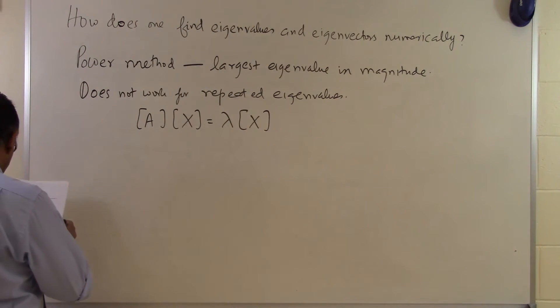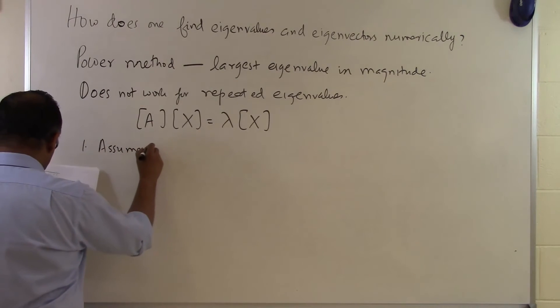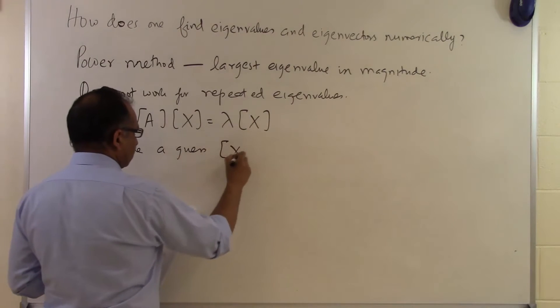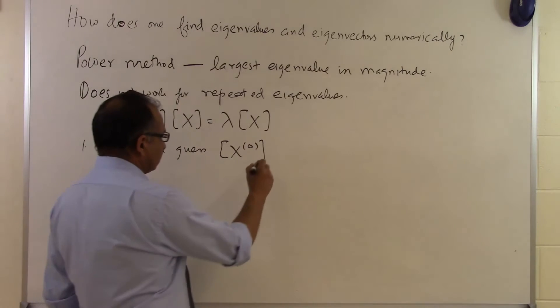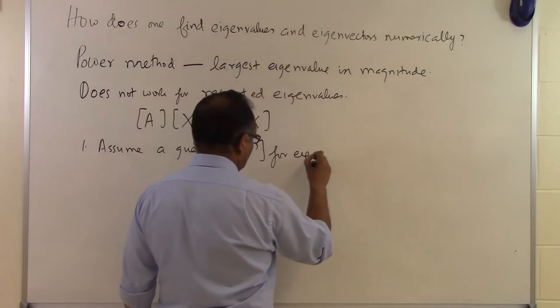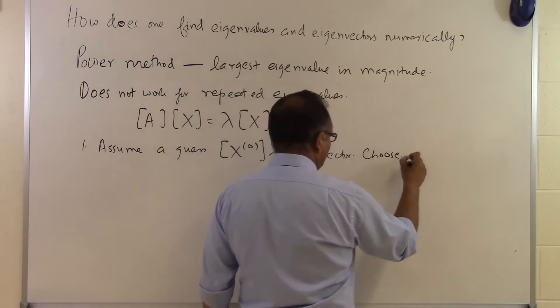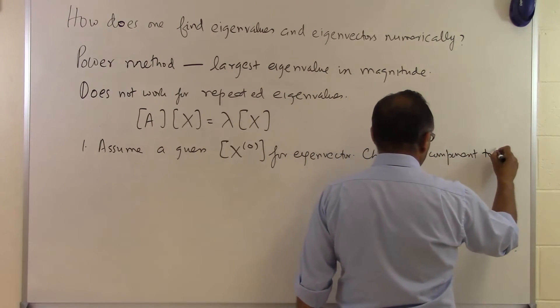How do we go about doing this in the power method is that we assume a guess—that's a guess for the eigenvector. Choose one component to be unity.